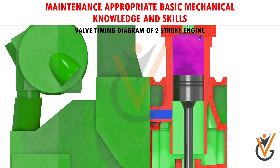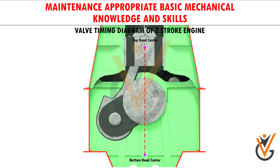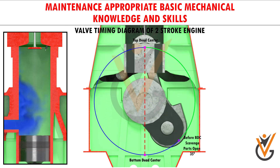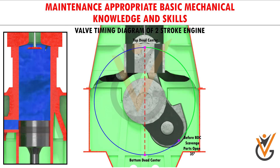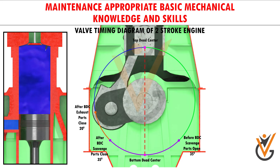At bottom dead center, both scavenge ports and exhaust valve are open. The valve timing diagram depicts the time at which the valves open and close. The induction of air starts when the scavenge ports open at 35 degrees before bottom dead center. The scavenge ports are closed at 35 degrees after bottom dead center. The exhaust ports close at 15 to 20 degrees after the closing of the scavenge ports. This process is also called scavenging, as the fresh air scavenges the exhaust gases.